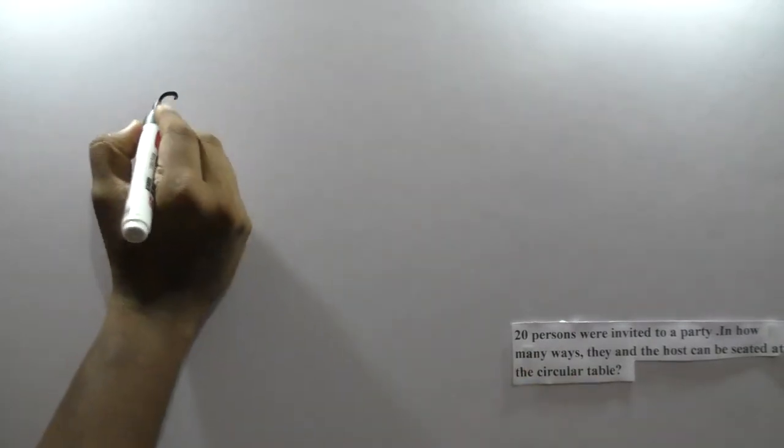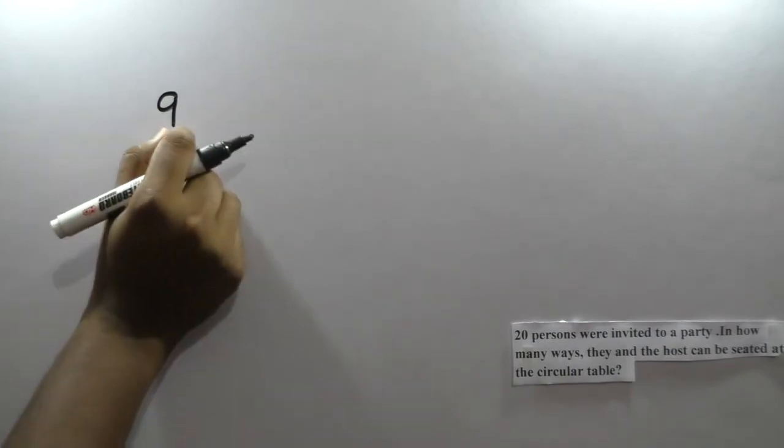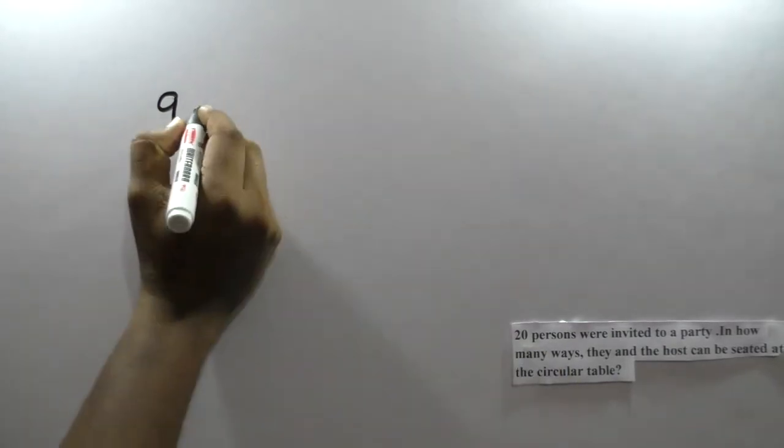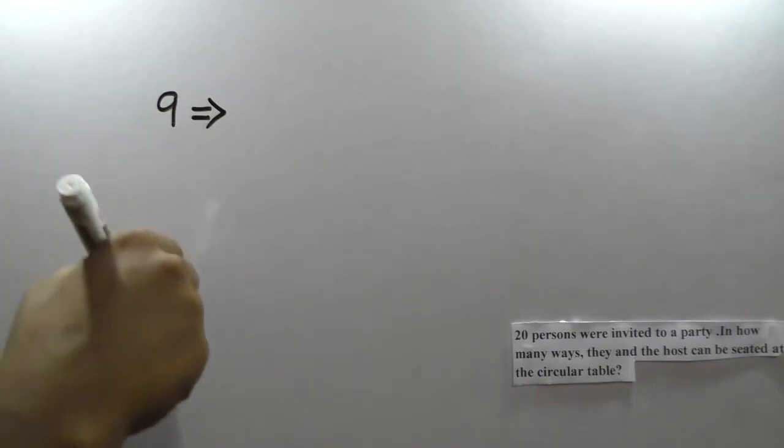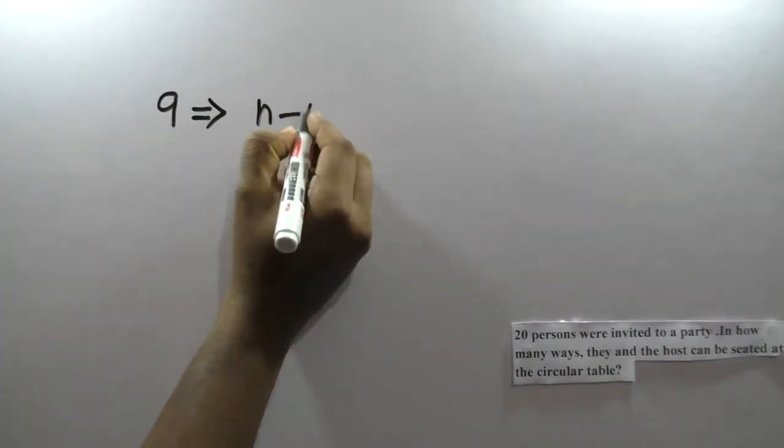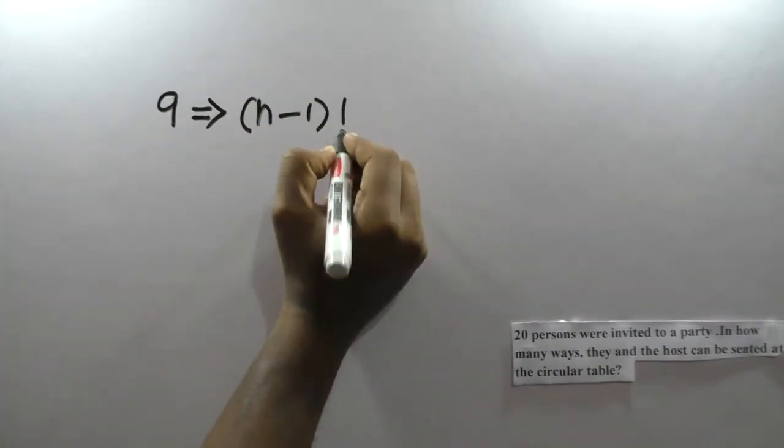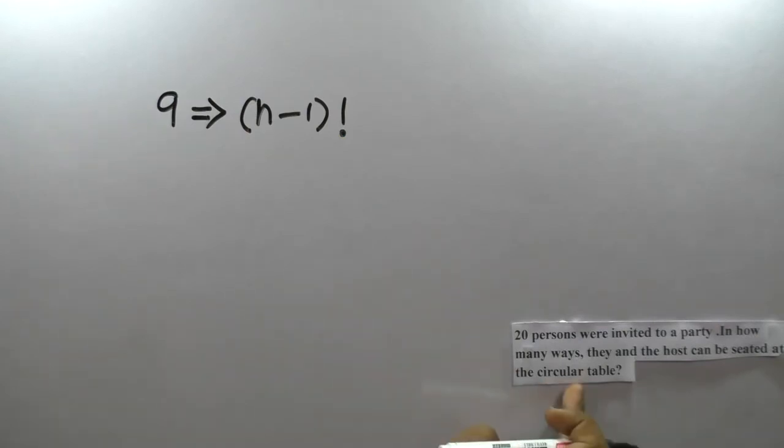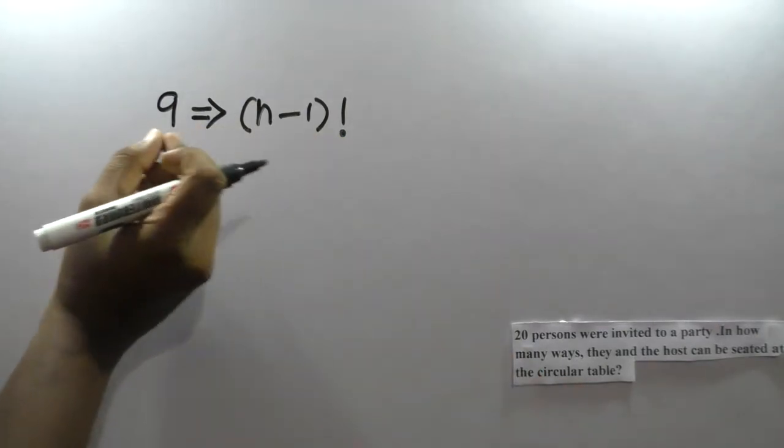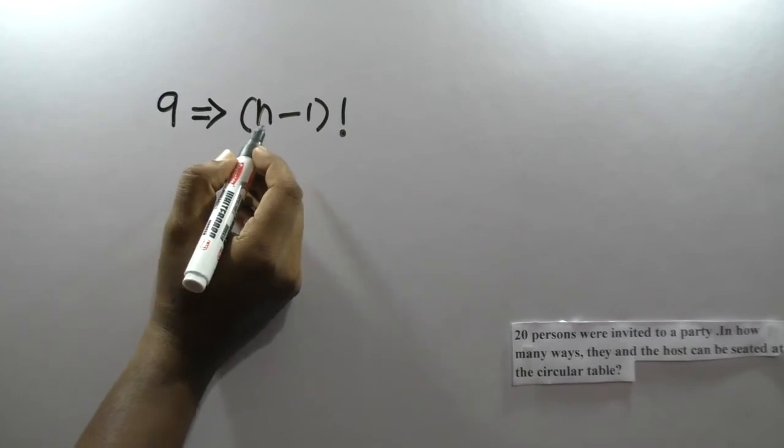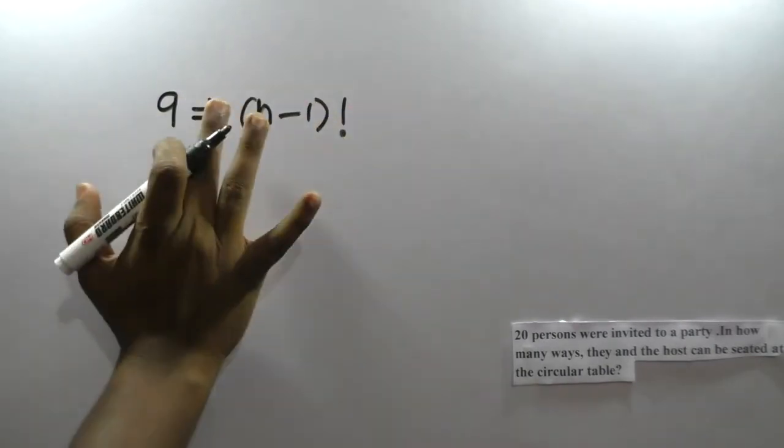In a circular table arrangement, for n persons on a circular table, the number of permutations is (n-1) factorial. This is the formula for circular permutations.